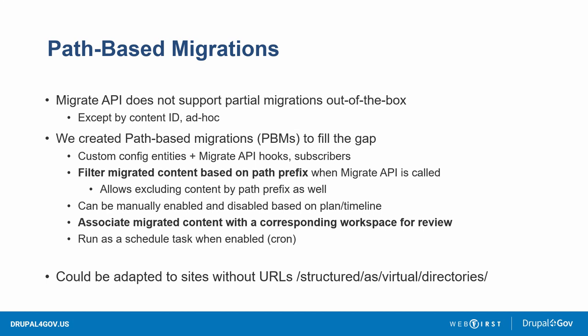This allowed us to filter the content as it's being migrated down to whatever path prefixes we wanted, and also exclude some path prefixes at the same time. At the same time we associate the content with a workspace as we migrate it. We'd have this running in the background on a cron task with Drush, and when migration managers were ready they'd enable the path-based migration, content would come over in a couple minutes in draft mode in the workspace, they'd review it, send it to stakeholders, and click publish on the workspace.